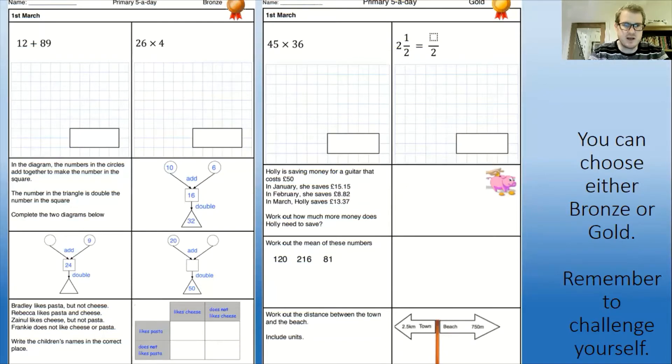I'll go through them nice and slowly. If you're doing the bronze, you've got a couple of number machines to have a look at and make sure you read the instructions really carefully. This one down here on the gold, work out the mean of these numbers. We have briefly talked about this but I'll just do a quick reminder.